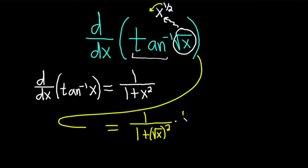So bring down the 1/2. We have x, and then we subtract 1 from the exponent. 1/2 minus 1 is negative 1/2.